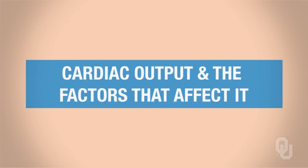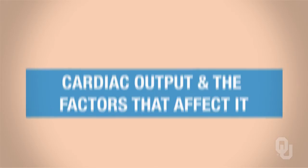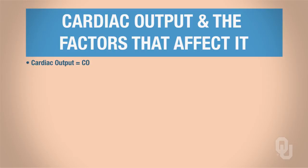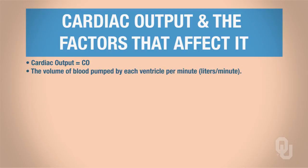The purpose of this video lecture is to learn about cardiac output and the factors affecting cardiac output. Cardiac output, abbreviated CO, is defined as the rate at which a ventricle pumps blood. The units are expressed as liters per minute, and the normal cardiac output is 5 liters per minute. Cardiac output can be calculated by multiplying heart rate times stroke volume.